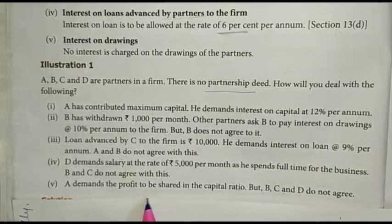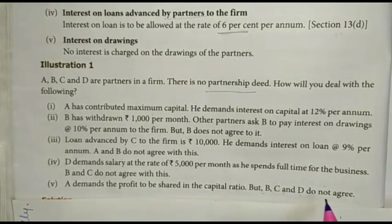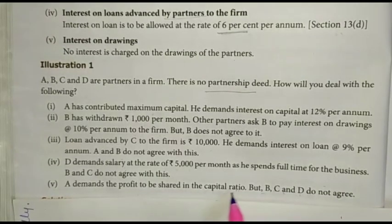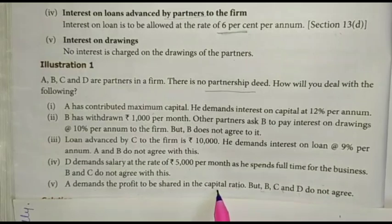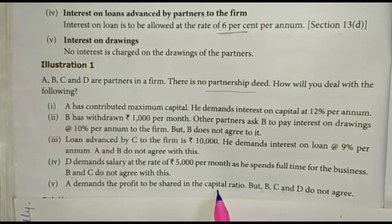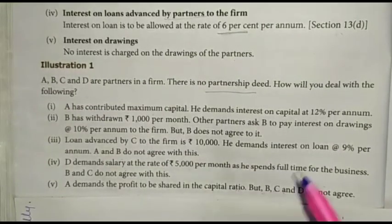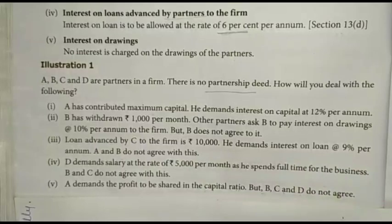Fifth: A demands the profit to be shared in the capital ratio. But B, C and D do not agree. A has contributed maximum capital and argues that those who invest more capital should get a higher share of profit.